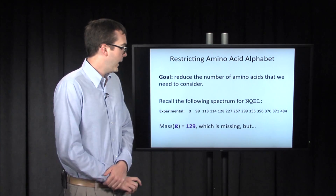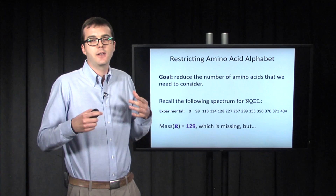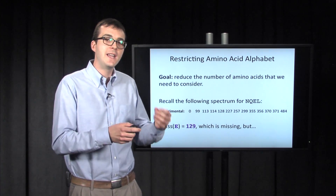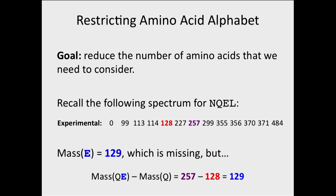We're going to say that we can't detect the mass of E — it's not in this experimental spectrum. So we're not going to identify that E is one of our amino acids that way. But hold on — we do detect 257, which is the mass of QE, and we do detect 128, which is the mass of Q. And if you subtract these two masses, you should get the mass of E. E is what's left over with QE and Q, so when you subtract them, you get 129.